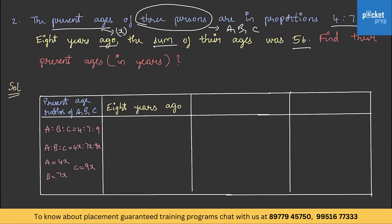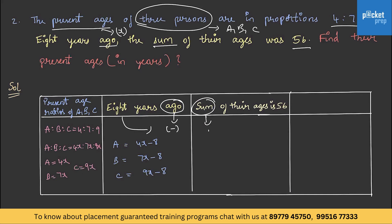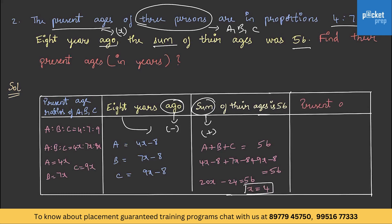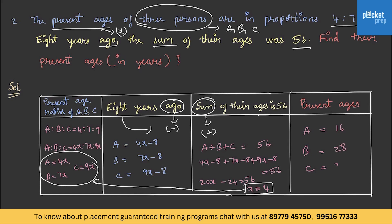For 8 years ago, 'ago' is the keyword so we subtract 8. A becomes 4x minus 8, B becomes 7x minus 8, and C becomes 9x minus 8. It is given that the sum of their ages was 56 eight years ago. So A plus B plus C equals 56, giving 4x minus 8 plus 7x minus 8 plus 9x minus 8 equals 56. On simplification, x equals 4. Substituting in A, B and C, the final present ages are 16, 28 and 36 respectively.